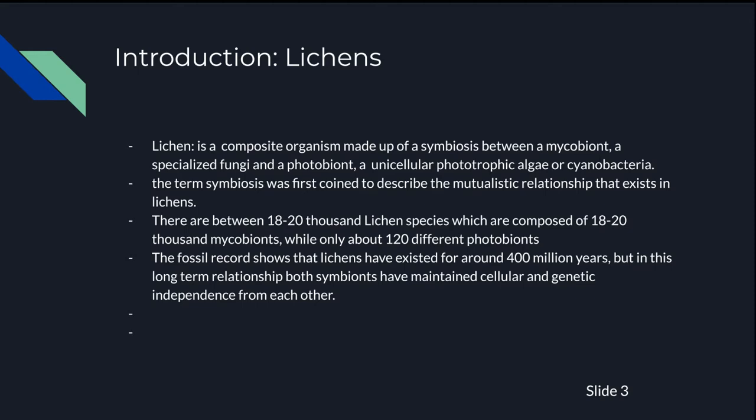Globally, there are between 18-20,000 lichen species which are composed of 18-20,000 mycobionts while only 120 different photobionts exist. The fossil record shows that lichens have existed for around 400 million years. But in this long term relationship, both symbiotes have maintained cellular and genetic independence from each other.